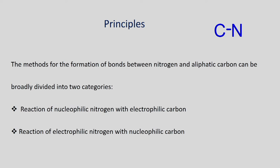The principle for carbon-nitrogen bond formation is shown in this slide. If the nitrogen is nucleophilic enough, it can undergo an addition reaction with an electrophile. For example, take formaldehyde — the electronegativity values are 3.6 and 2.5, so this carbon is electrophilic in nature because the bond pair is polarized towards oxygen. When you have nucleophilic nitrogen, it can undergo addition reaction to give the addition product.